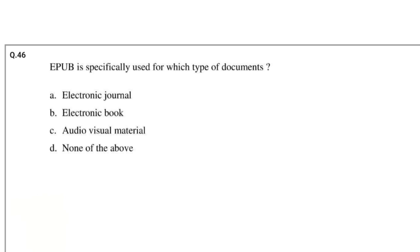Question number 46: EPUB is specifically used for which type of documents? Options: Electronic journal, Electronic book, Audiovisual material, None of the above. The answer is Electronic book.